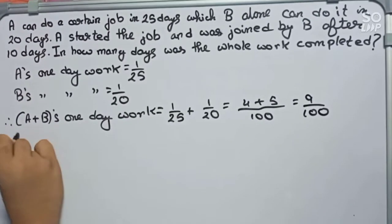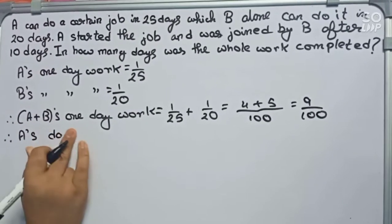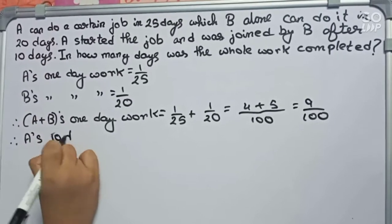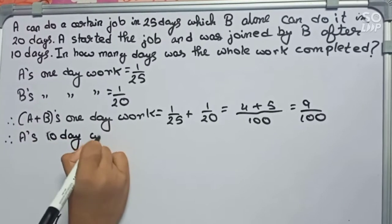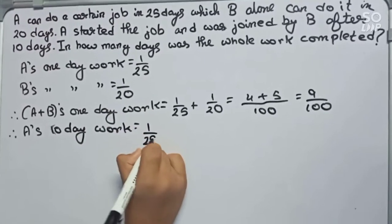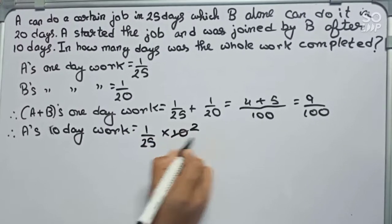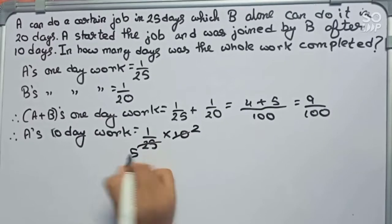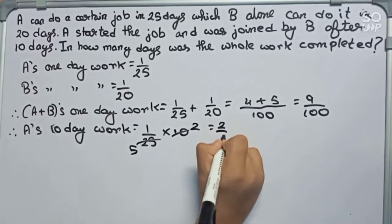Now we will find A's 10 day work. It will become 1 by 25 into 10. We cut by 5, which gives us 2. So A's 10 day work is 2 by 5.